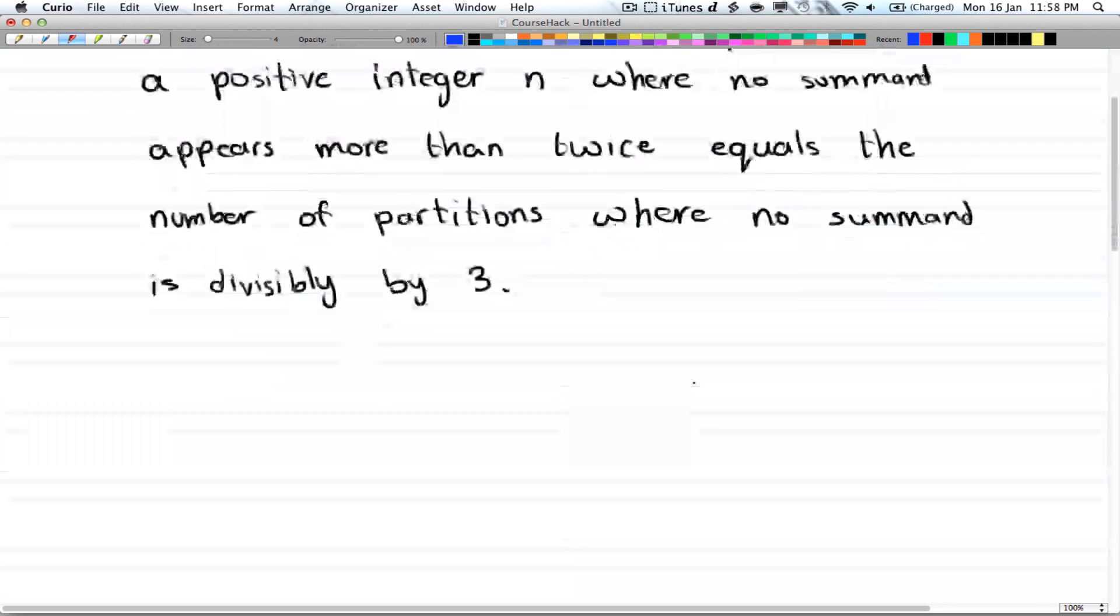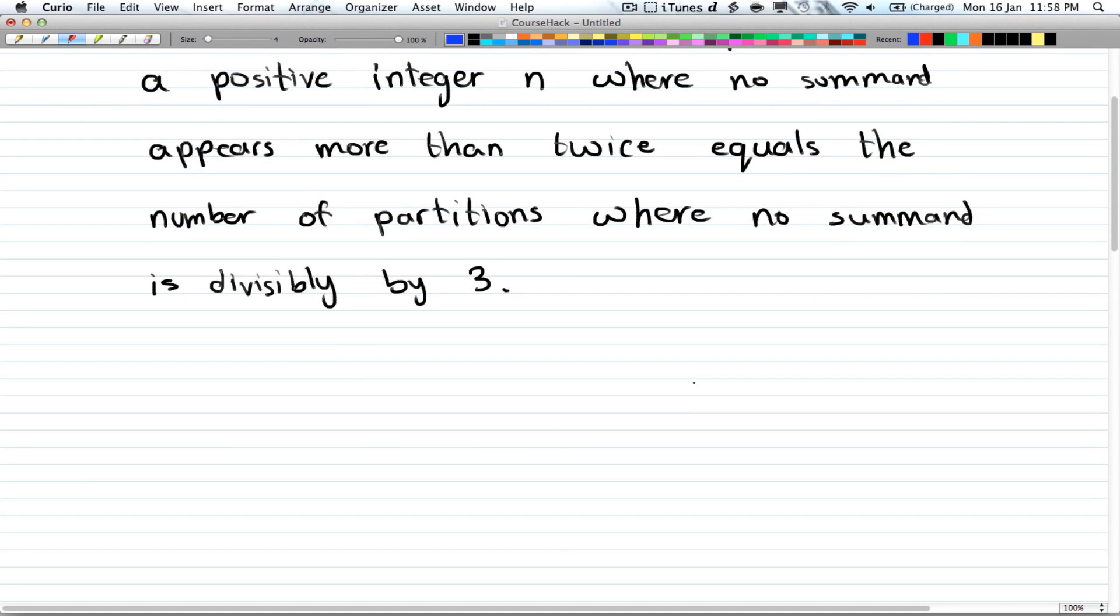So you can only have 1, 2, 4, 5 - no 6 - 7, 8, and so on. No number is divisible by 3, and that will be equal to the number of partitions where any number doesn't appear more than twice.